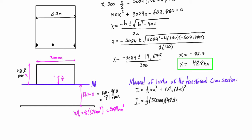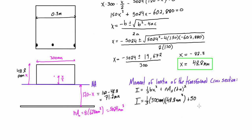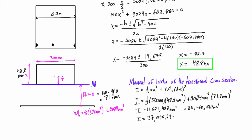Plugging in the values: one-third times 300 mm times (48.8 mm)³, plus 5024 mm² times (71.2 mm)². It's good to track units to confirm we get mm⁴. This gives us I equals 37.09 times 10 to the negative 6 meters to the power of 4.